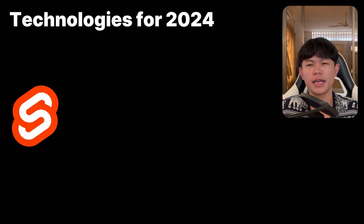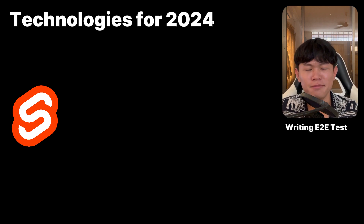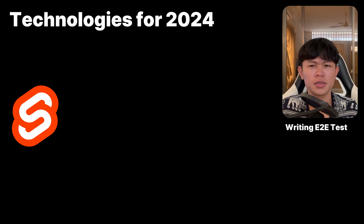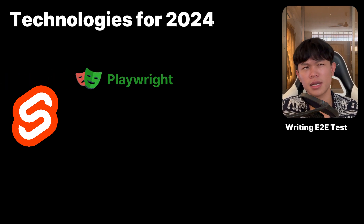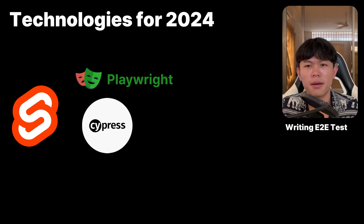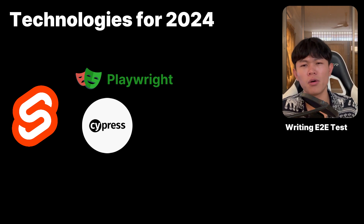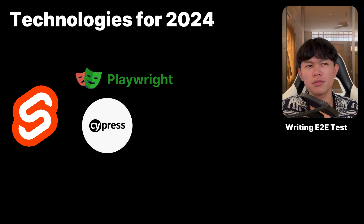The second technology I want to learn is writing tests. Previously I didn't really enjoy writing tests at all, so most of my applications don't have them. I want to write end-to-end tests, and there are two options: Playwright and Cypress. I don't know which one is best, so let me know in the comments if you've used either. I tried Cypress before for very small cases, but never on a full-fledged project — so this year I'm going to try.